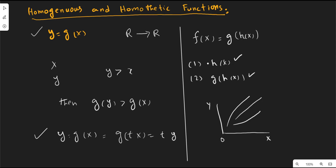In a homogeneous production function, if you double the vector of input bundles, your output will also be doubled. But in the case of a homothetic function — which is the monotonic transformation of a homogeneous of degree 1 function — if you double the vector of inputs, it is not guaranteed whether your output will be doubled, less than double, or greater than double. This depends upon the nature of the monotonic transformation, so the functional form — whether its slope is steeper, normal, or flatter — is not clear.